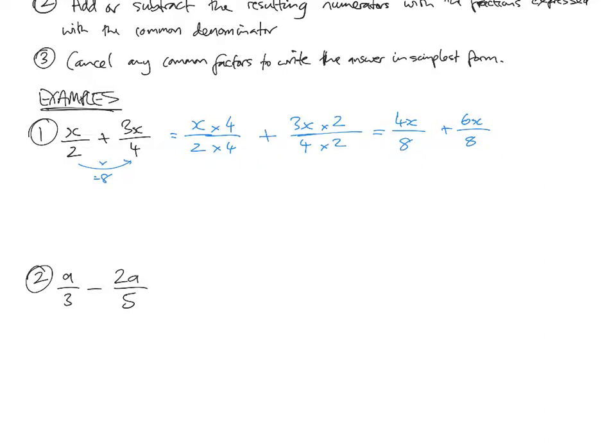Does this make sense? x on 2 is half of x. Does this cancel down? 4 goes into 8 twice, so it's 1 over 2, half of x. It's the same.